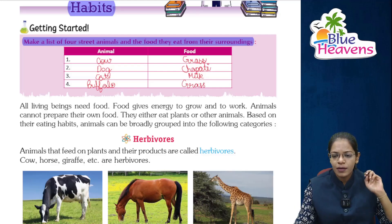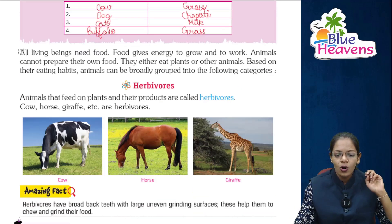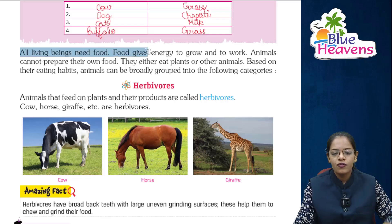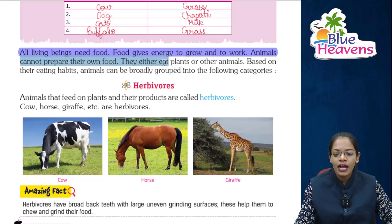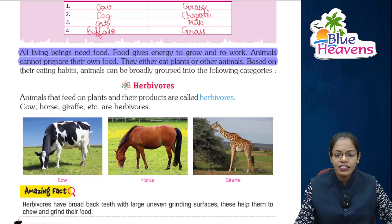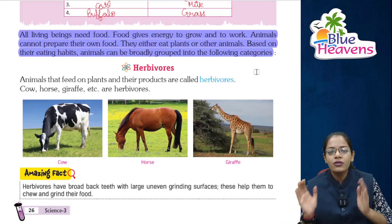Now let's read the chapter. All living beings need food. Food gives energy to grow and to work. Animals cannot prepare their own food; they either eat plants or other animals. Based on their eating habits, animals can be broadly grouped into the following categories.